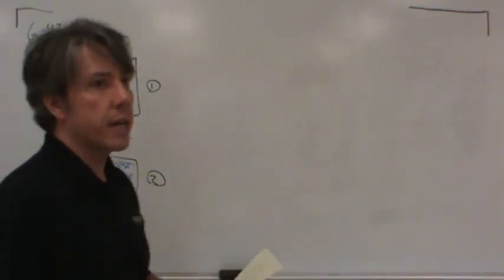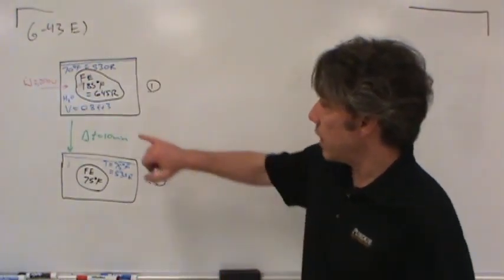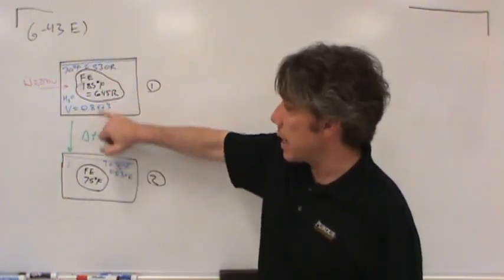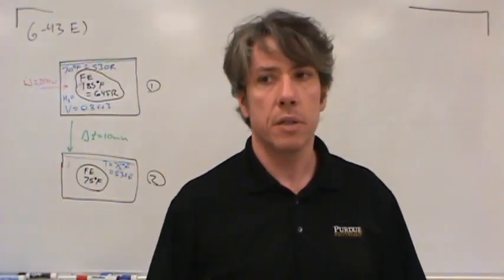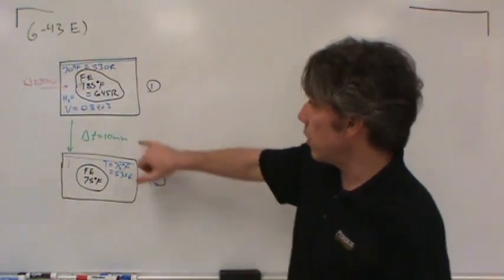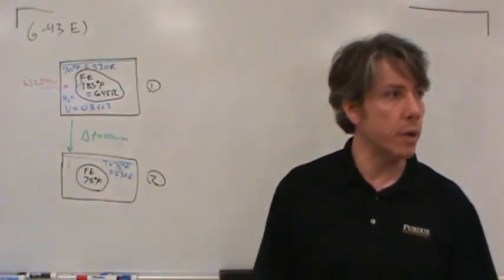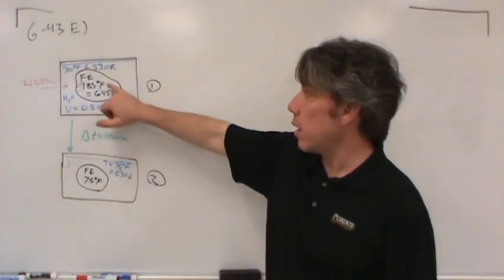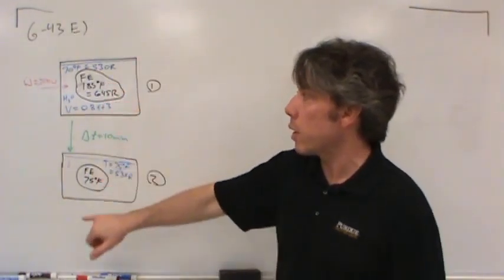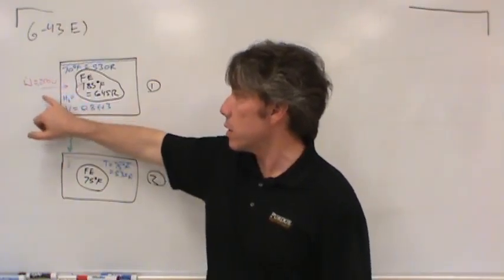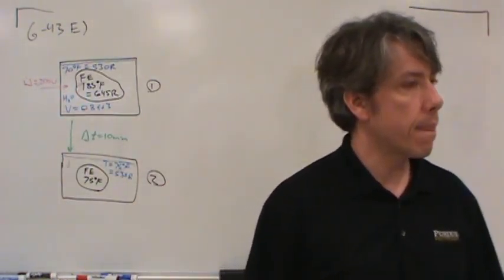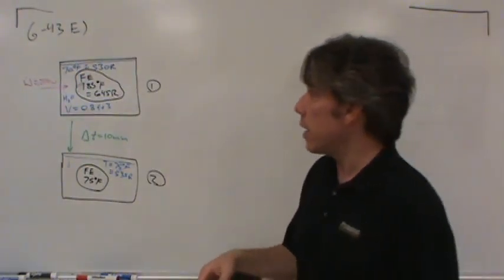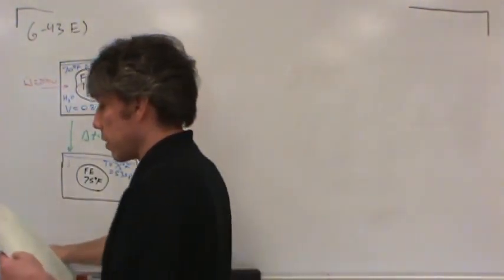The first question is: how much mass of iron is there? If you know the heat capacity of the iron and water, and the temperature change of the iron, you can figure out how much energy the iron lost. And if you know the mass of the water — which you can get from its volume and density — then the energy lost by the iron equals the energy gained by the water plus the energy added by the paddle wheel. We use an energy balance to find the mass of the iron.